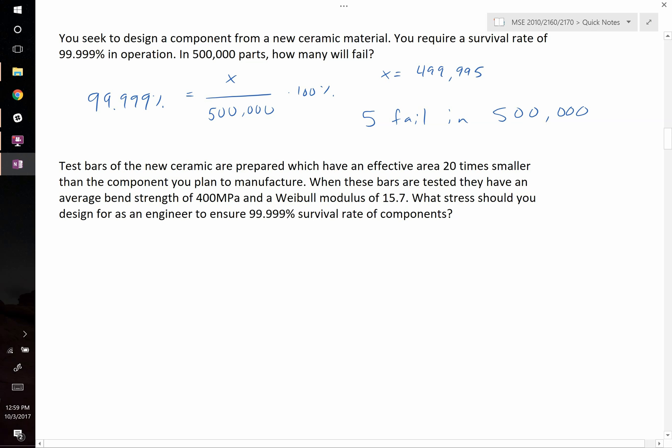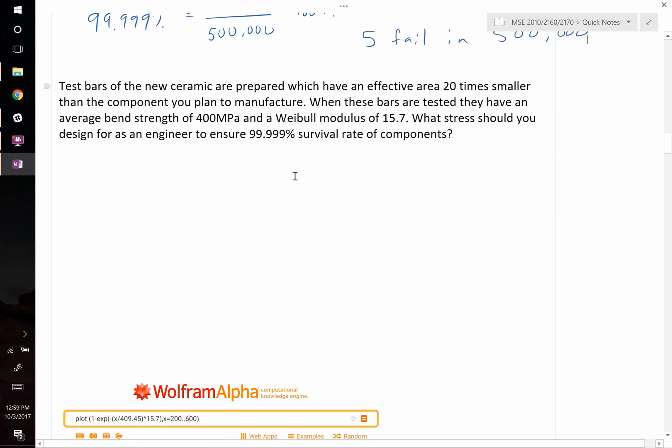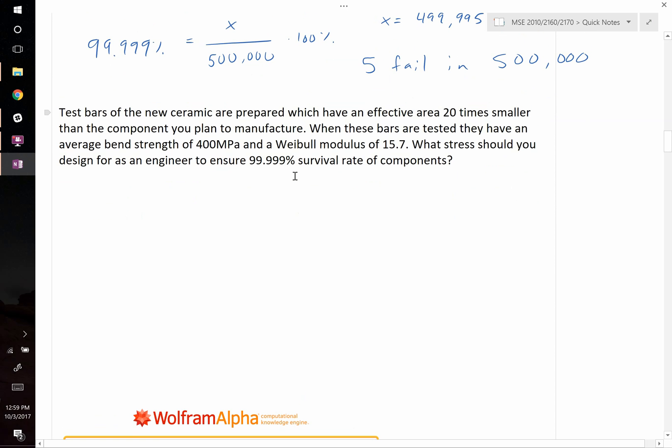The second part of the question says you test bars of the new ceramic and these have an effective area 20 times smaller than the component that you plan to manufacture. When you test these bars, you find that they have an average bend strength of 400 MPa and the Weibull modulus is 15.7.